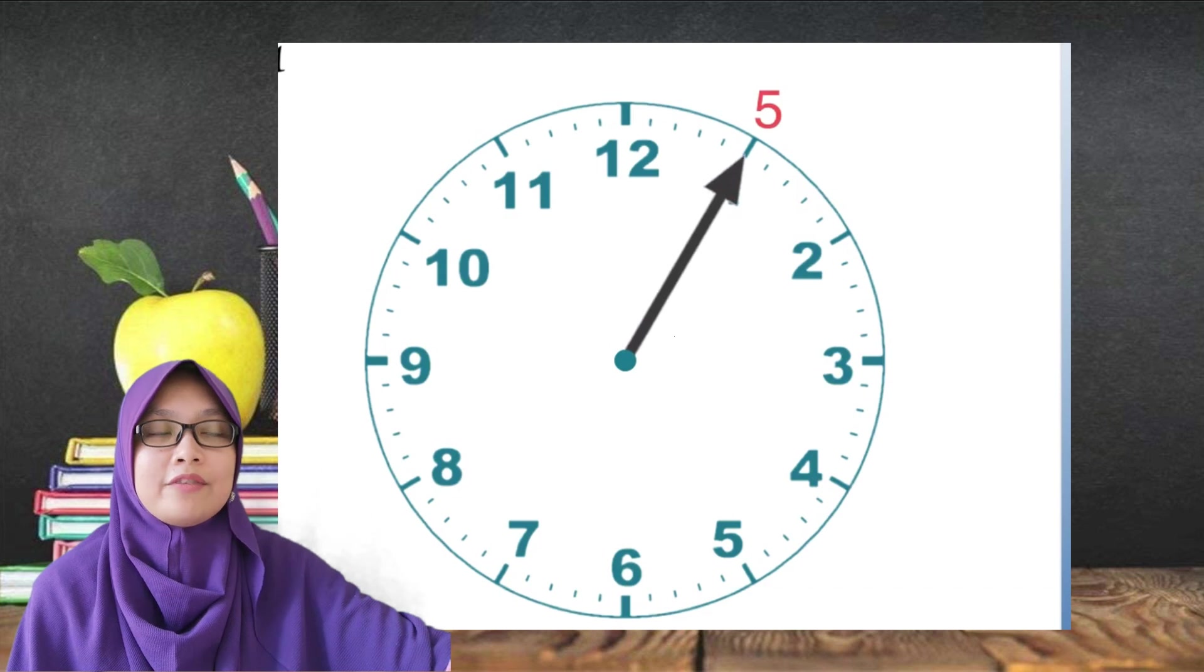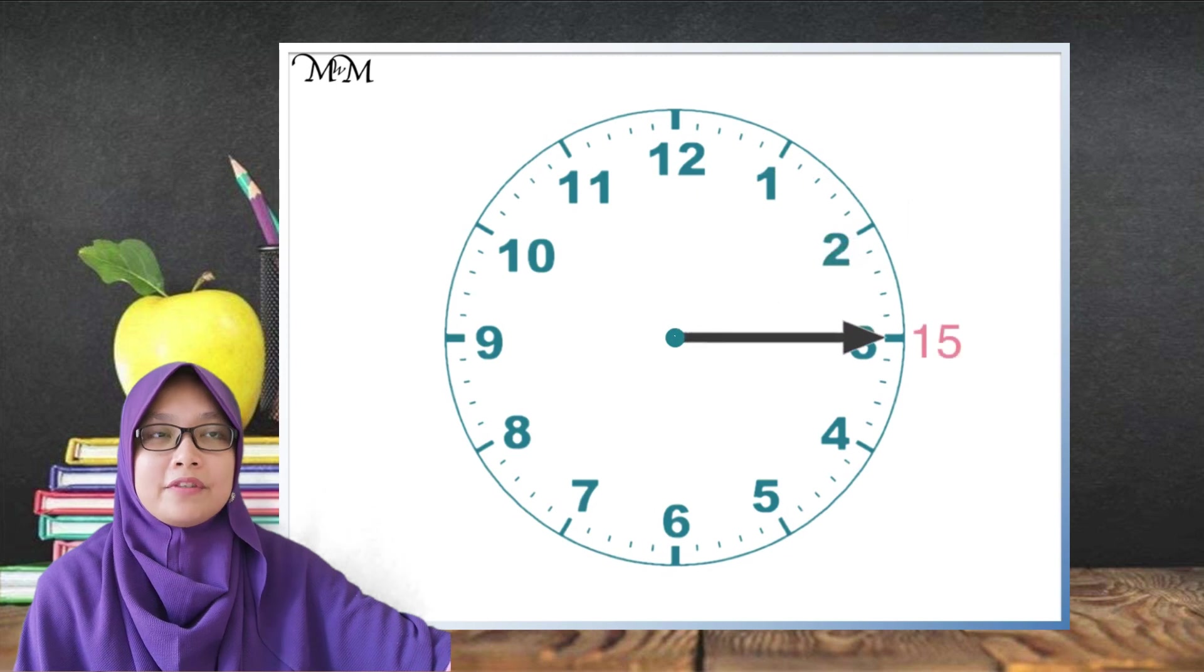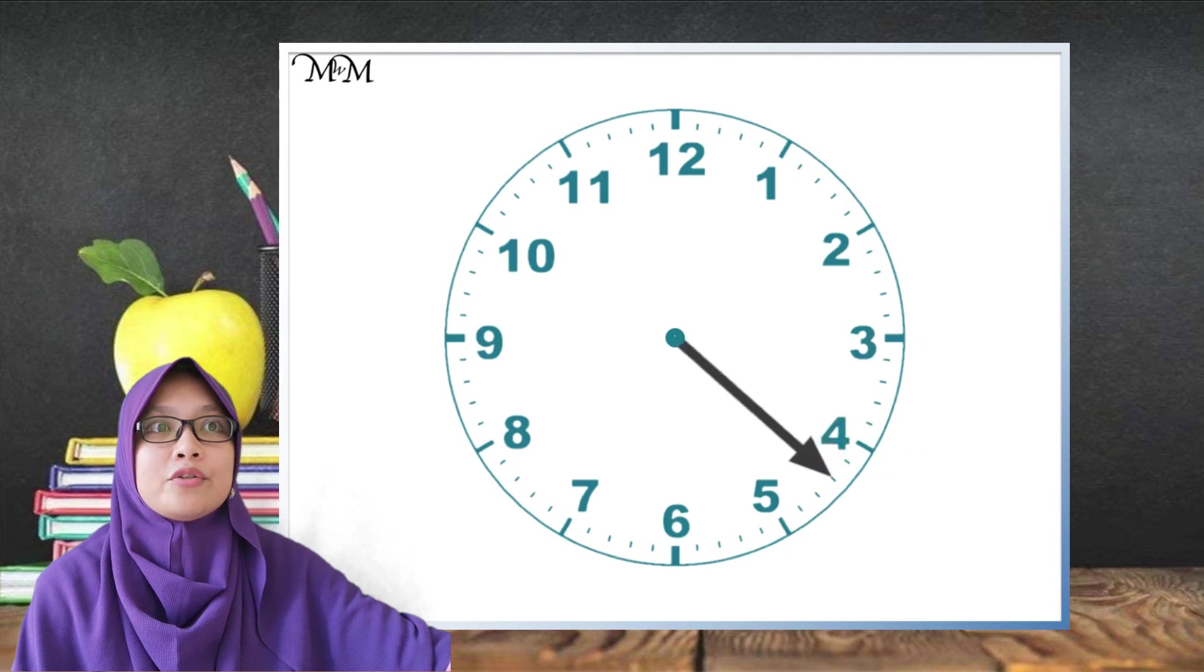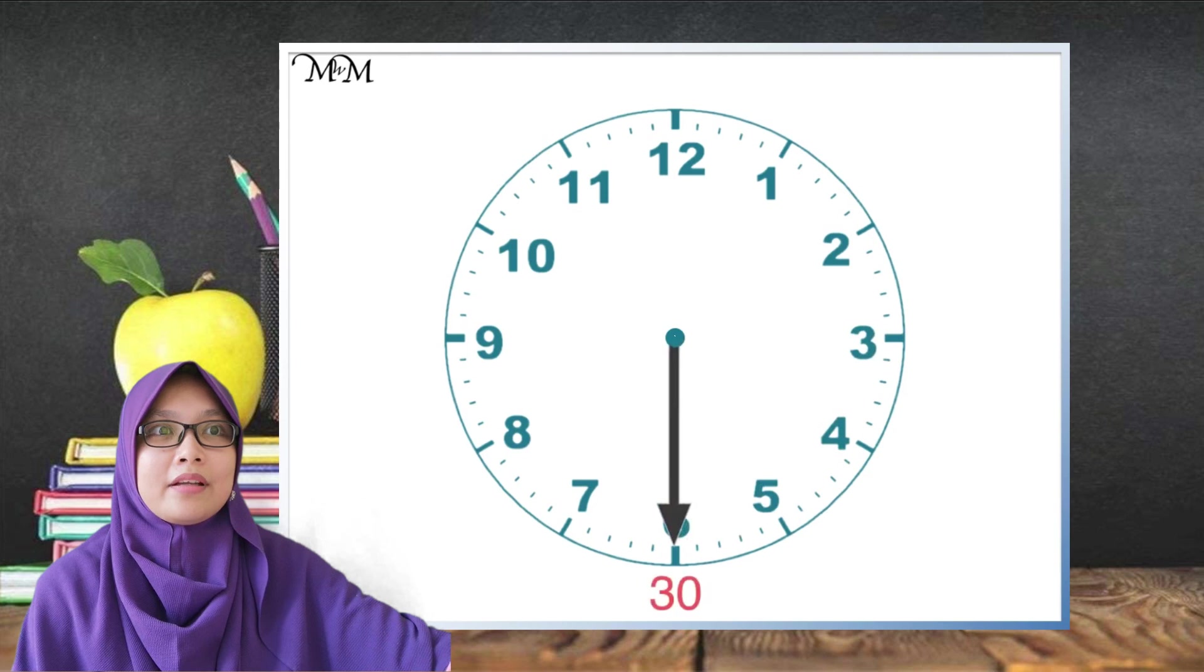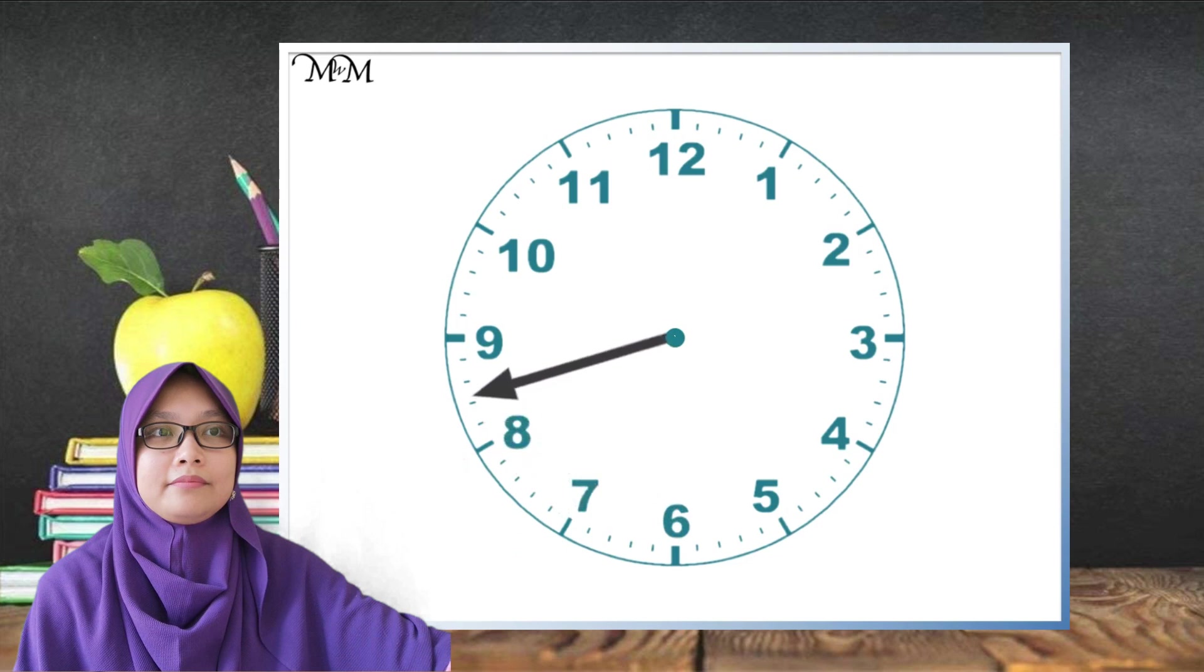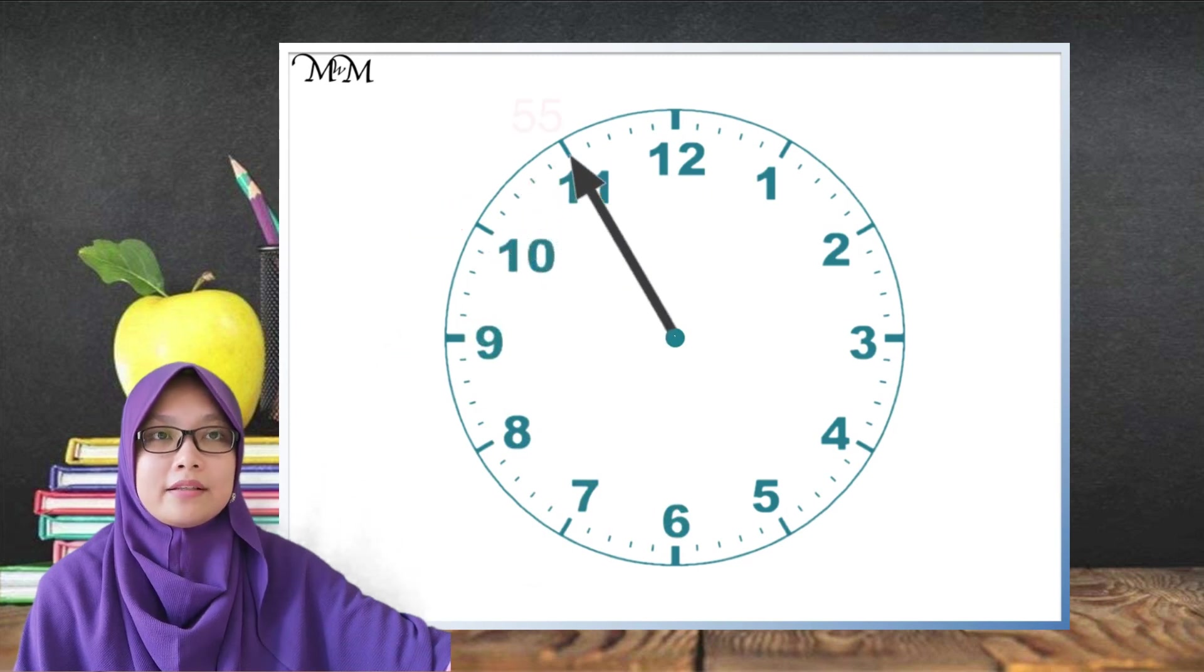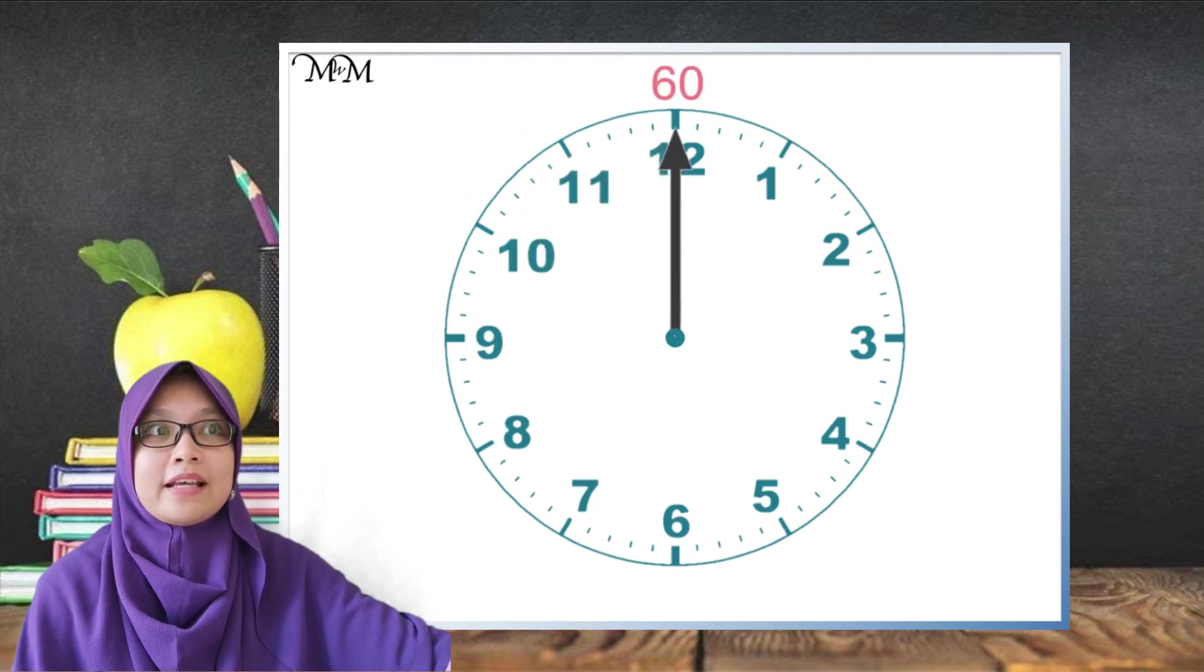We can count in 5s. 10 minutes, 15 minutes, 20 minutes, 25 minutes, 30 minutes, 35 minutes, 40 minutes, 45 minutes, 50 minutes and 55 minutes. So, when we get back to 12, 60 minutes has passed. This is one hour.